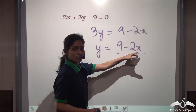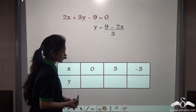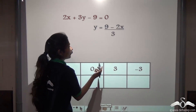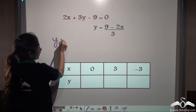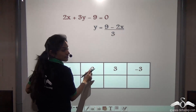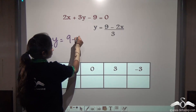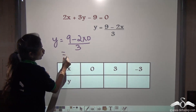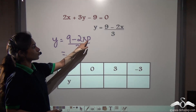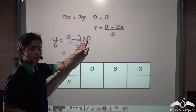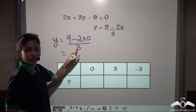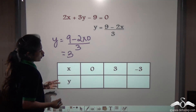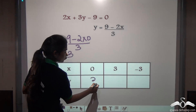Now we will put values for x to find out y. Let's take random values for x such as 0, 3, and minus 3. Taking first x as 0: we get (9 minus 2 into 0) by 3, which is (9 minus 0) by 3, giving us 9 by 3 which is 3. So when x is 0, y is 3 for this equation.